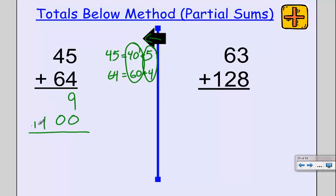Now I need to do a second addition by place value. Nine ones plus zero ones is nine. I don't have any tens to add, and I bring my 100 down. So 45 plus 64 is 109.